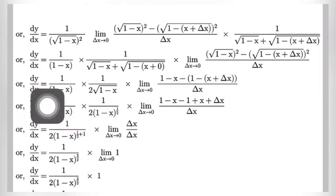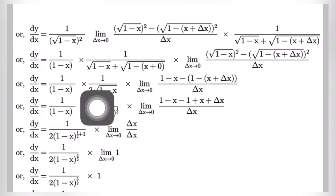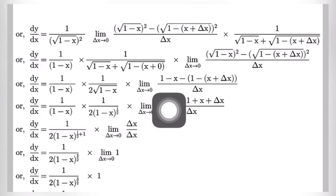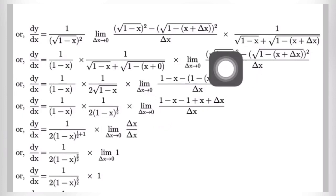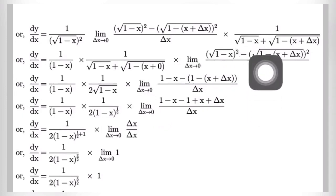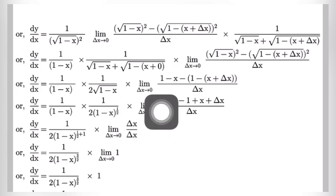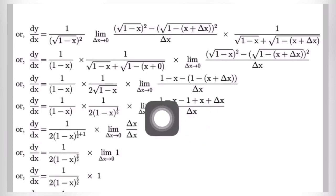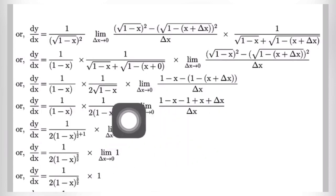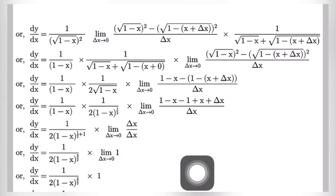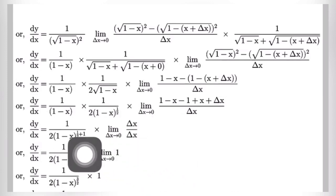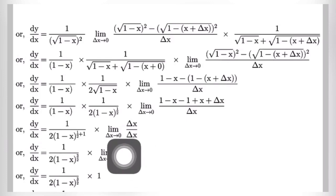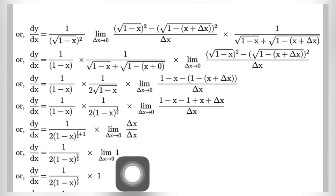So dy by dx is equal to 1 by 1 minus x, times 1 by 2 root under 1 minus x, times the limit del x tends to 0 of 1 minus x minus open bracket 1 minus x plus del x close bracket, all divided by del x. Here 1 and 1 cancel out, x and x cancel out, leaving limit del x tends to 0 of del x divided by del x. Del x and del x cancel, and the limit of 1 as del x tends to 0 is simply 1, since 1 is independent of del x.